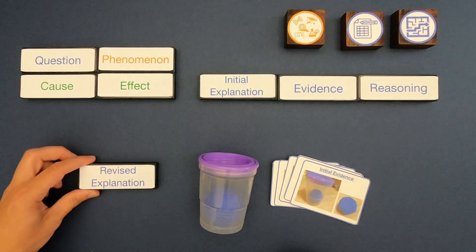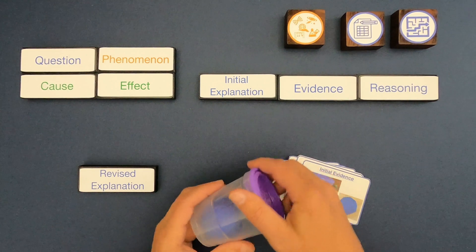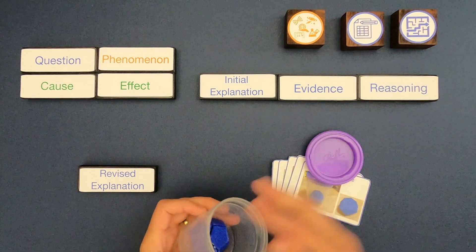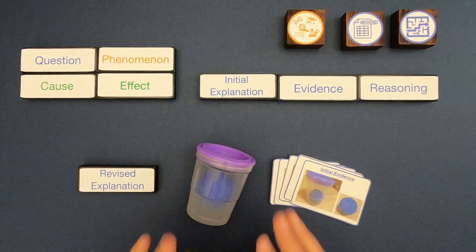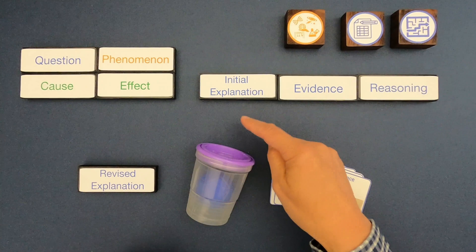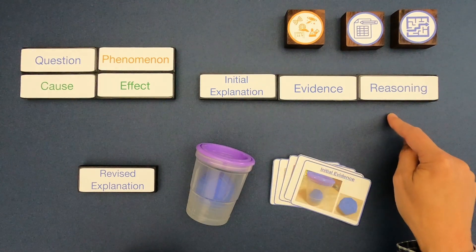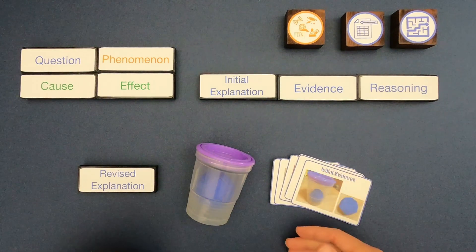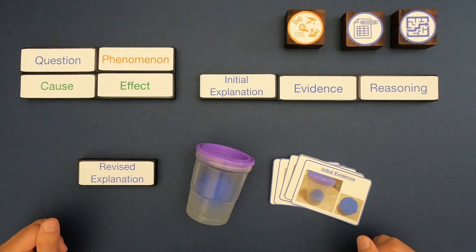Now that you've learned how to make a revised explanation, you should try it on your own. The phenomena is a blue model inside a container. Pause the video, write down the initial explanation with evidence and reasoning. Then I'll put a link below to additional evidence — use that to revise your explanation, then unpause and come back to see how ours compare.